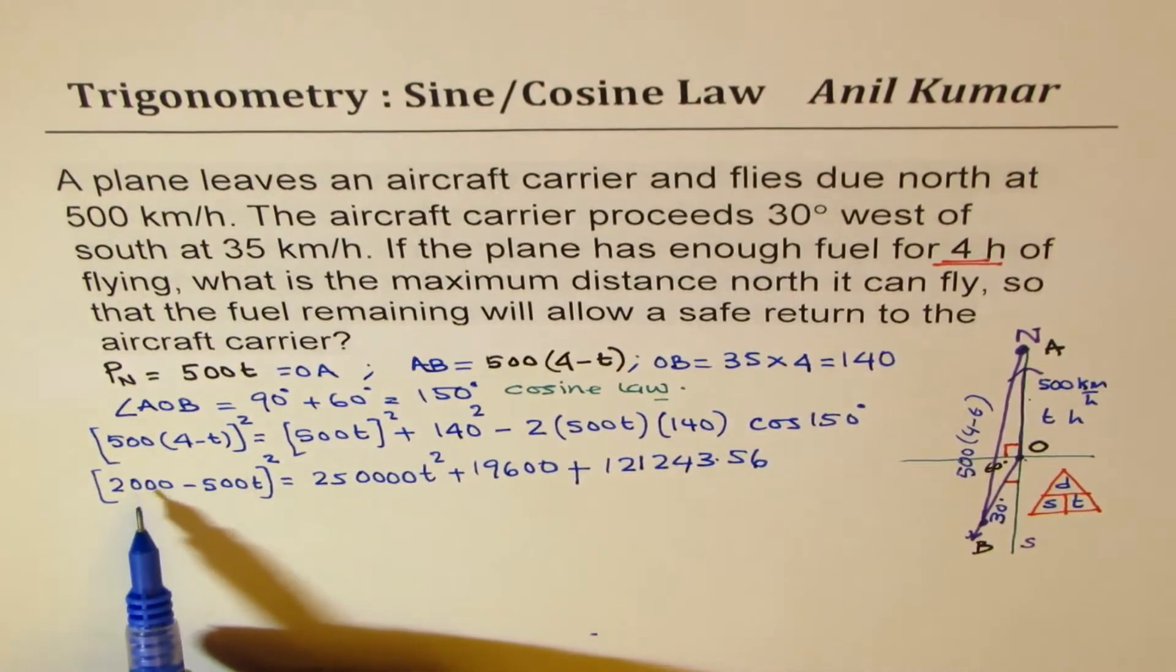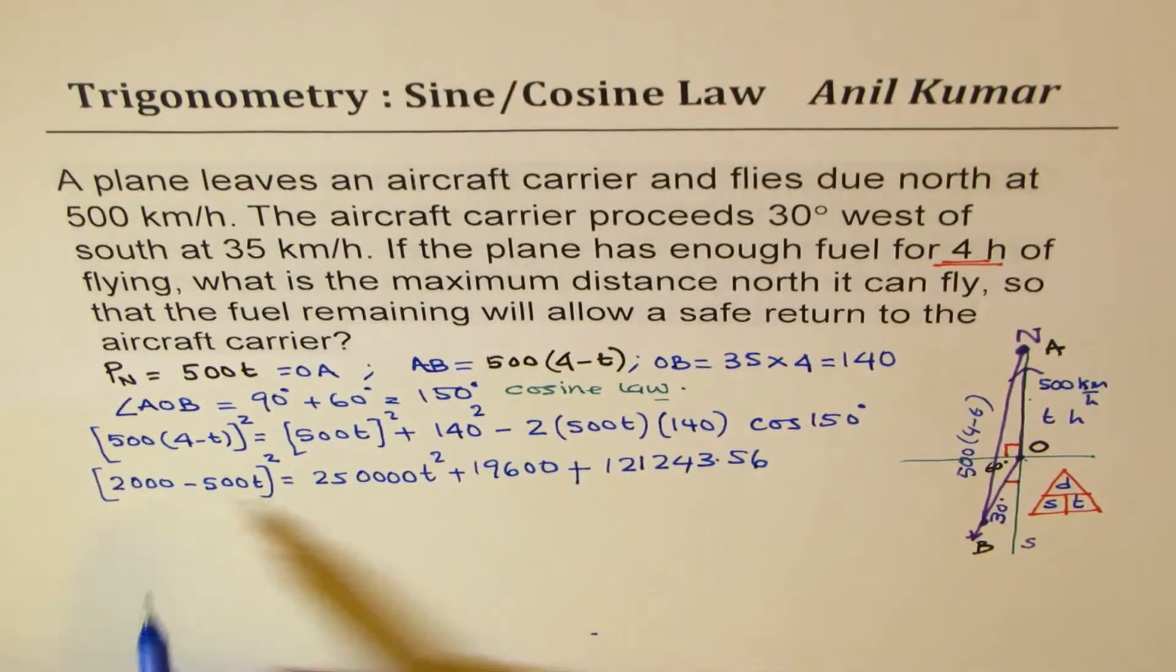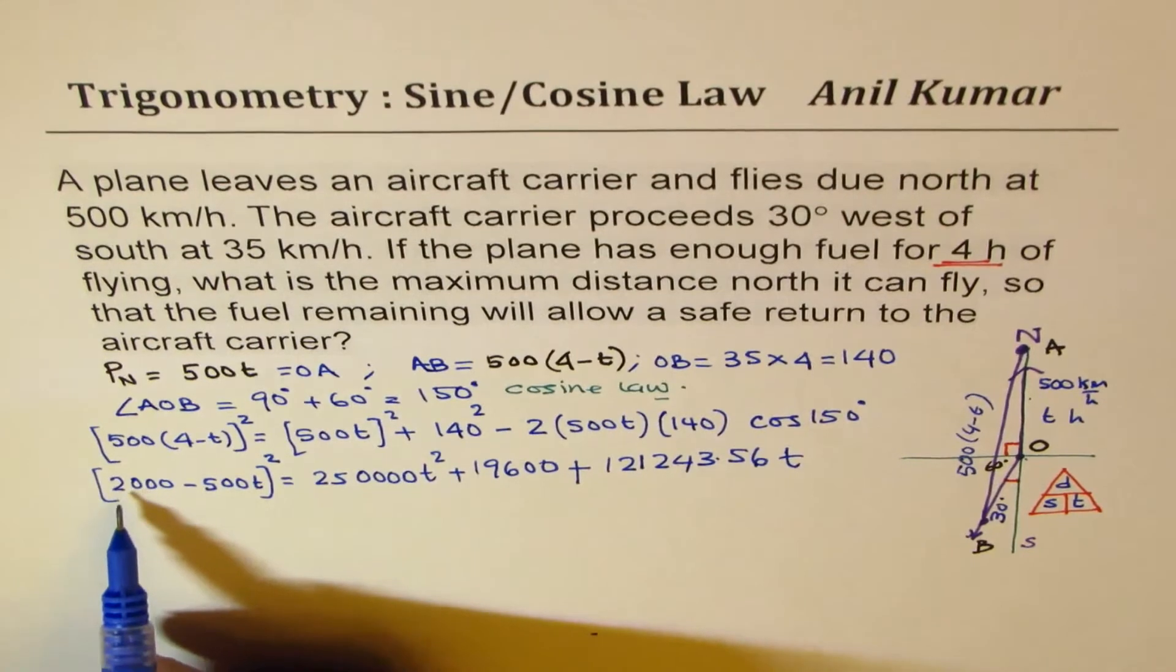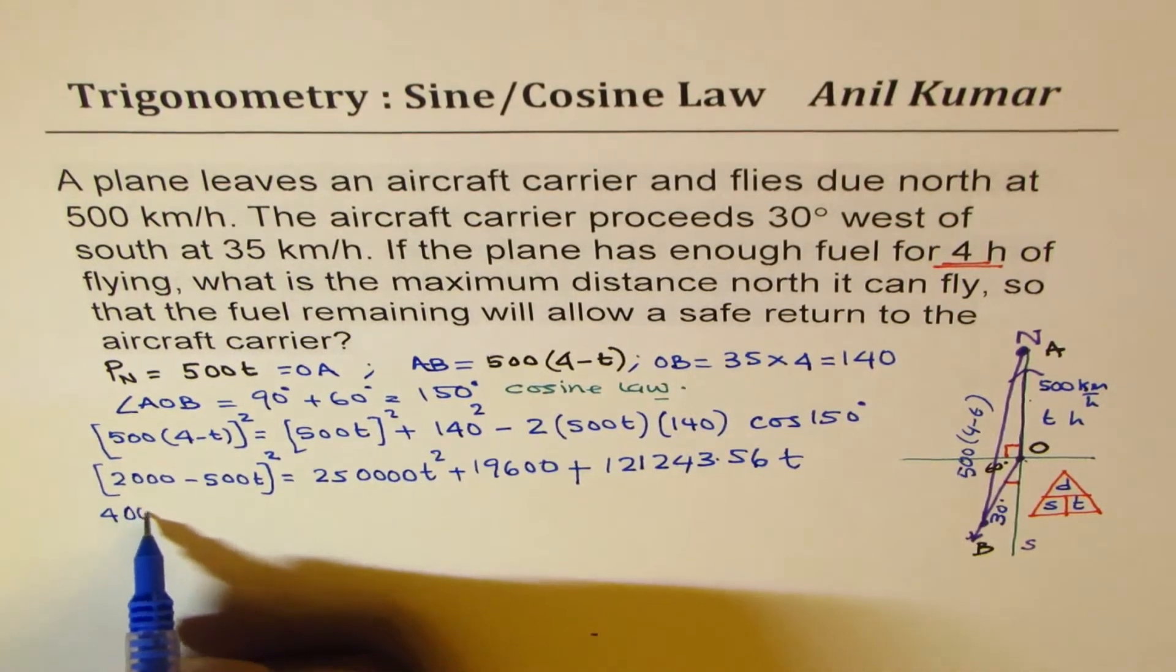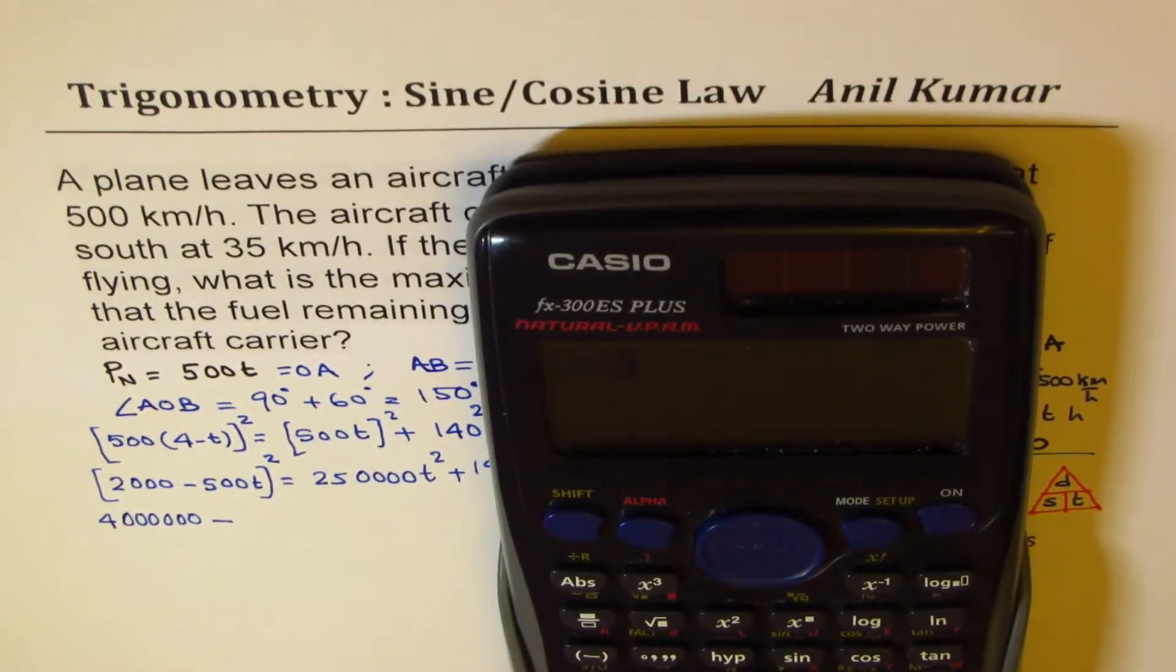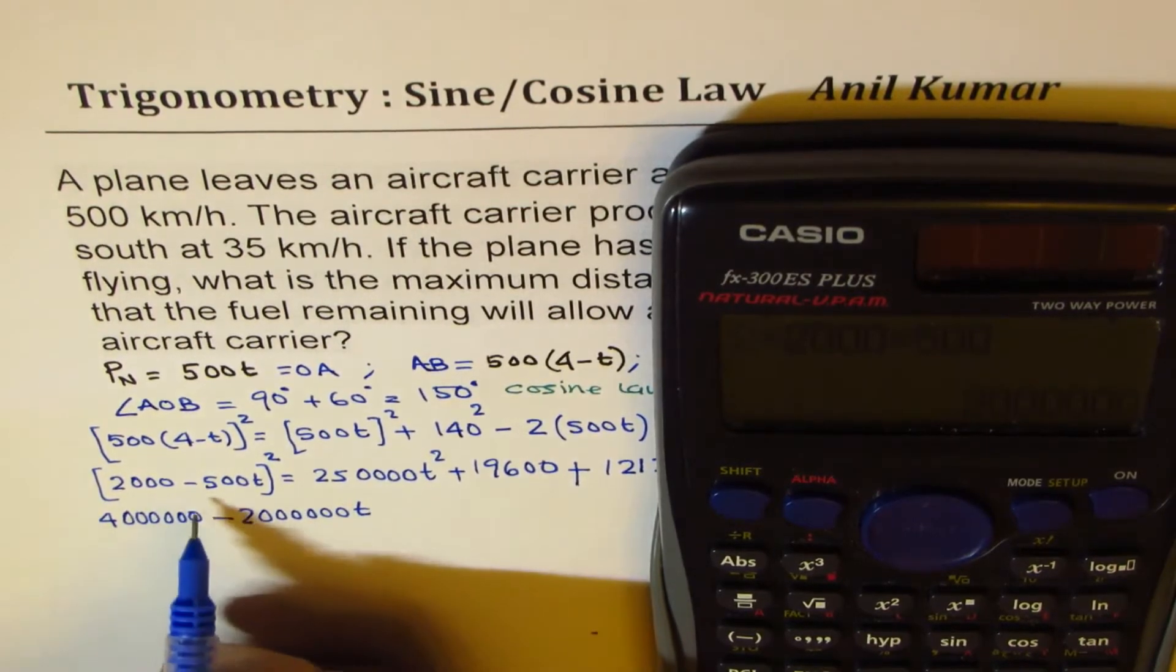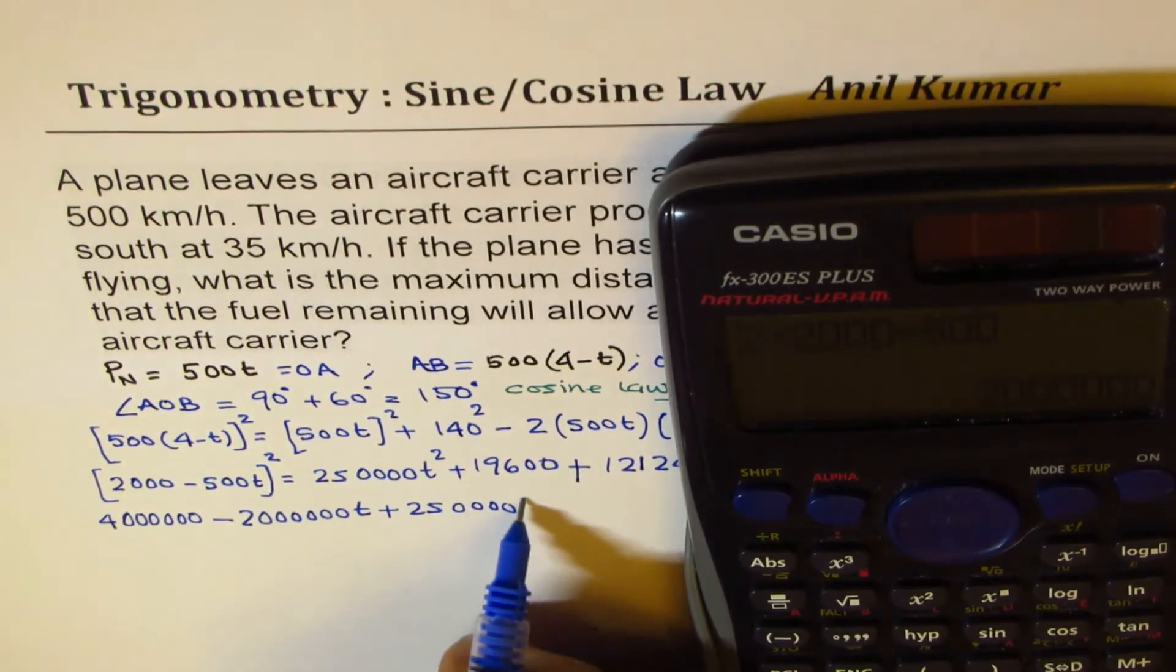On the left side, we have A minus B whole square, we can expand this, A square minus 2AB plus B square. And there was T also here, so let me write T also here. So square of 2,000 will be 4, 2 times 2 is 4, and 6 zeros, that means 4 million. 4,000,000 minus twice these terms, which is 2 times 2,000 times 500 is 2 million, 2 million T. Plus square of this, which is 250,000 T square.